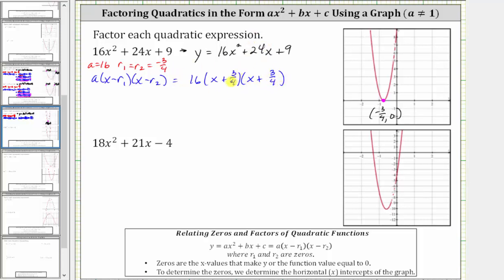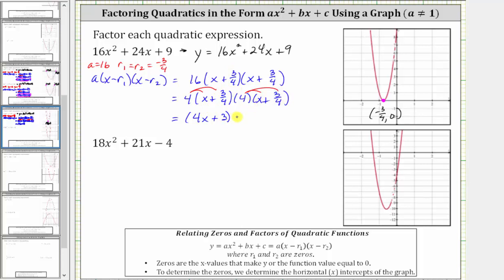While this could be considered factored form, we normally don't leave fractions in the binomials. Because we have a denominator of four, we can clear the fractions by multiplying each of the binomials by four. Notice 16 is equal to four times four. So let's rewrite this as four times the quantity x plus 3 fourths, times four times the quantity x plus 3 fourths. Distributing four gives us four x plus three in each binomial, so we have two of the same binomial factors, which we write as the quantity four x plus three squared. Because we have two of the same binomial factors, the original expression is a perfect square trinomial.